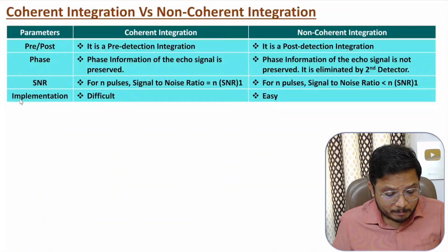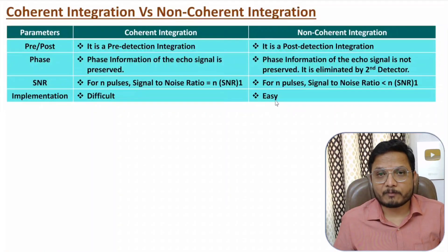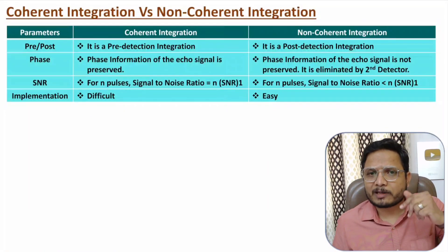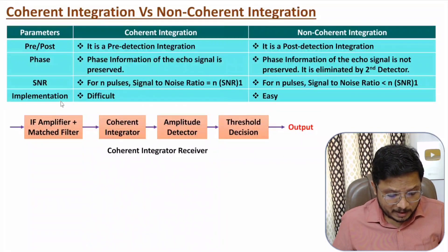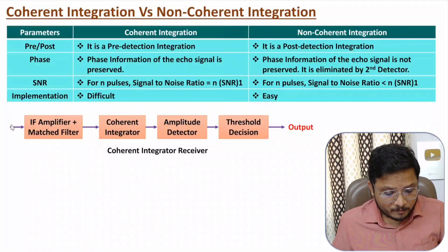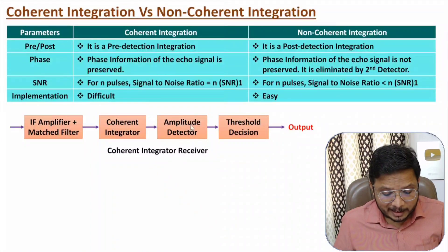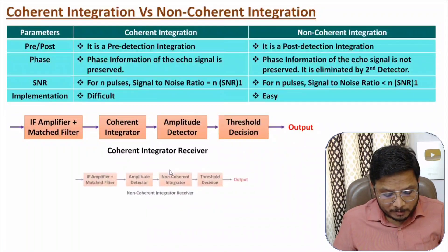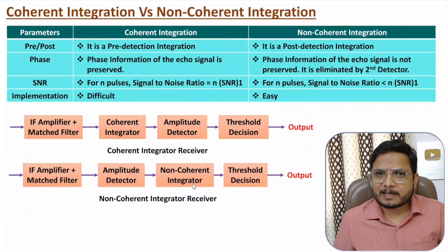The last parameter is implementation: coherent integration is difficult and costly to implement, while non-coherent integration is easy to perform. For the block diagrams — in the coherent integrator, the received signal after the mixer goes to the IF amplifier plus match filter, then to the coherent integrator placed before the second detector, followed by threshold decision. In the non-coherent integrator, the signal goes through the second detector and then the non-coherent integrator is placed after it — that is the basic block diagram.